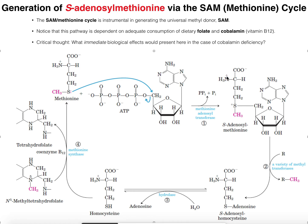This S-adenosylmethionine has an activated methyl group — it's primed for being attacked by other functional groups. If a nucleophile of some other molecule, R, were to attack the CH3, then R will receive that CH3 and all the other atoms will be the leaving group. There are many different methyl transferases; SAM donates its methyl group to R, which becomes R-methyl, and the remainder of those atoms is called S-adenosyl homocysteine.